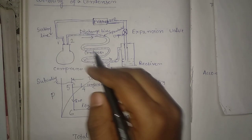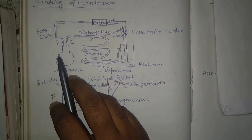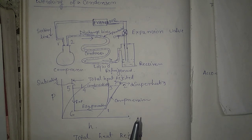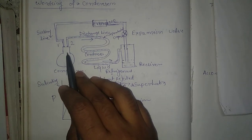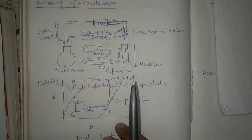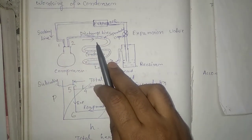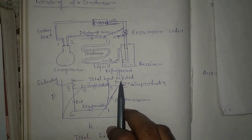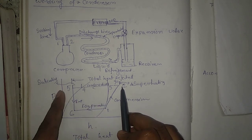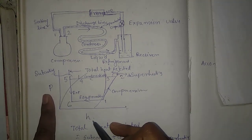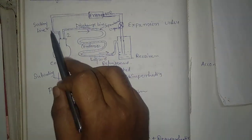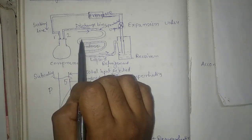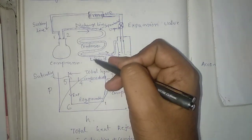First, the compressor draws the superheated vapor refrigerant from the evaporator. That superheated vapor refrigerant, which contains heat from the evaporator, is then pumped through the discharge line to the condenser. In the condenser, heat is rejected from the vapor refrigerant, converting it back to liquid refrigerant.